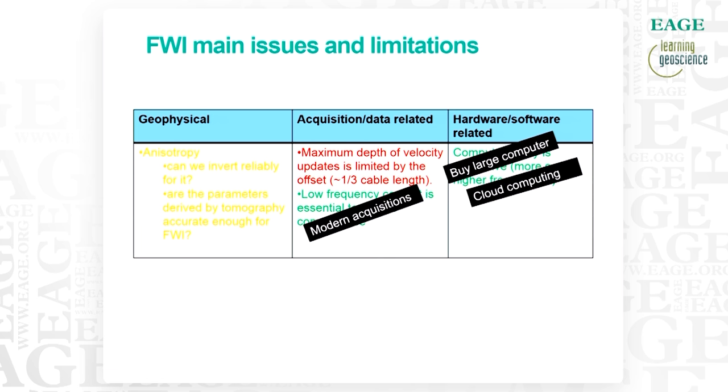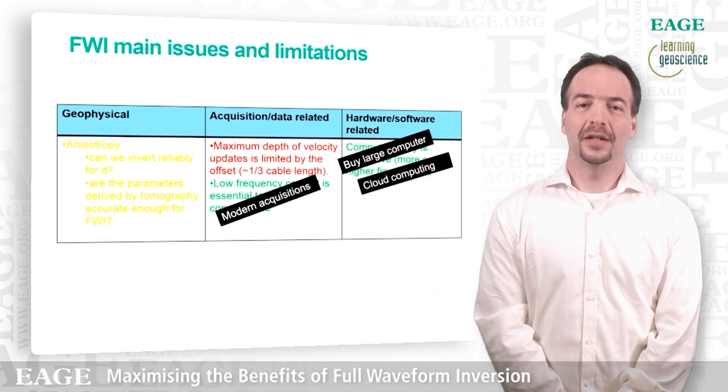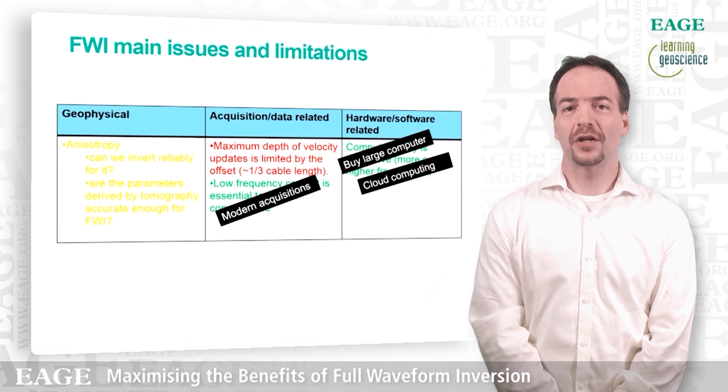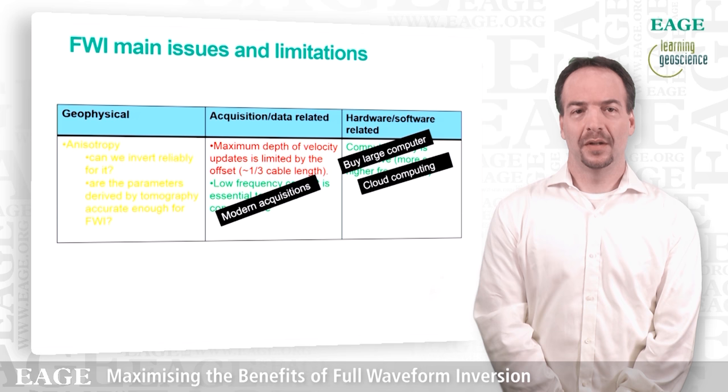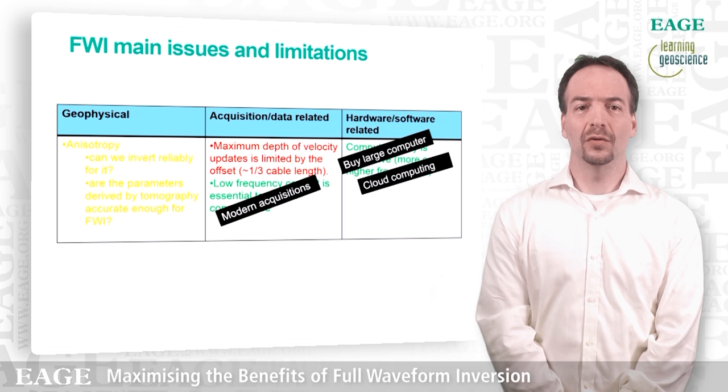If we color-code these issues with a traffic light system, some of them are easily solved. In particular, low frequency nowadays with modern acquisition and deep tow is an issue that has already been solved. From the hardware side, there is nothing that impedes us from buying a large computer, and there is also the possibility of using cloud computing where we can borrow a large number of nodes for a limited amount of time and release them when the project is complete. From a geophysical point of view, while we haven't solved the multi-parameter inversion, sometimes average-value anisotropy allows the FWI solution to produce a result that is acceptable for our needs.